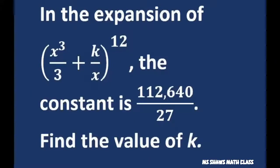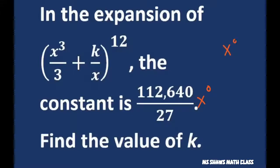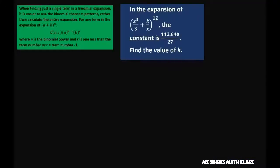Hi everyone. We're going to find the value of k for the expansion of x cubed divided by 3 plus k divided by x, all raised to the 12th power. They give you the constant term. This means it's really times x to the 0 power. Remember x to the 0 power equals 1, so that equals your constant term.